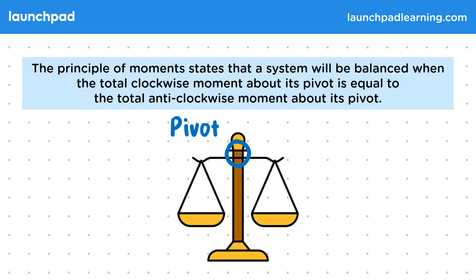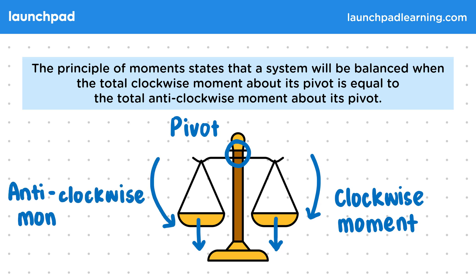If we put a weight on the right scale, this will pull down on the right side of the bar at the top and give it a clockwise moment. Then, when a weight is also on the left scale, this pulls down on the other side of the bar to give it an anticlockwise moment.